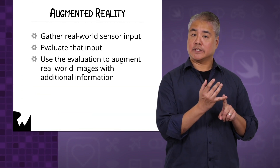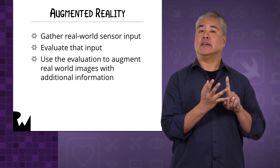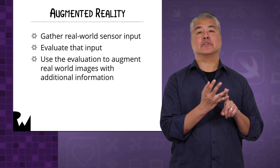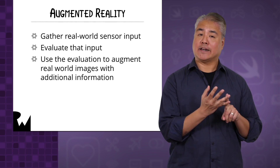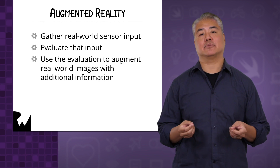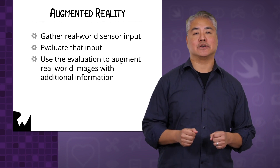ARKit can't tell you if a person is good or evil yet, but it can turn your iDevice into an augmented reality machine. It gathers real-world input from your iDevice's camera and other sensors, evaluates that input through the ARKit API combined with the code that you write, and finally uses that evaluation to augment real-world images with virtual computer-generated images.